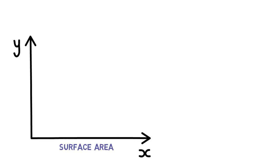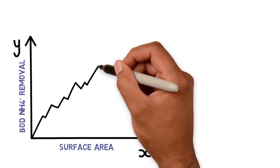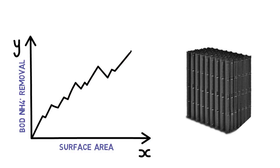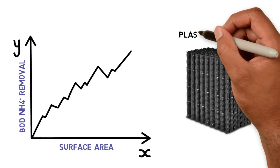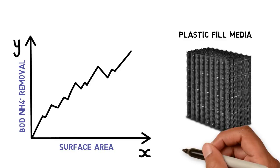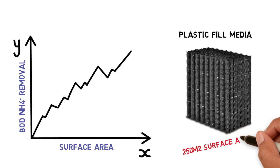As more surface area for attached biofilm growth is available, more BOD and ammonium can be removed. One option for increased surface area is to install plastic-filled media blocks into the wastewater basin. The corrugated channel design of the fill media blocks provides up to 250 square meters per cubic meter surface area per one cubic meter of tank volume.